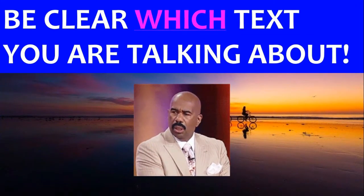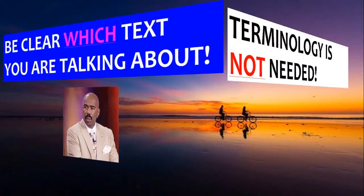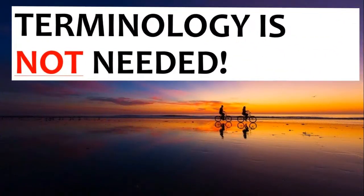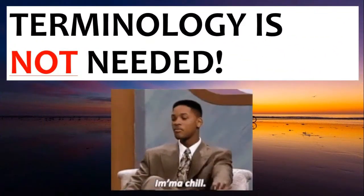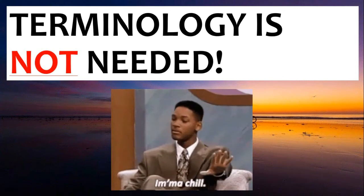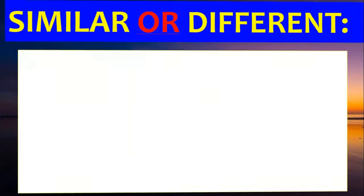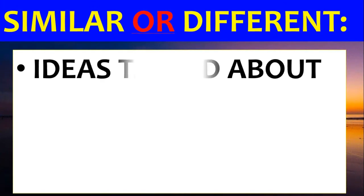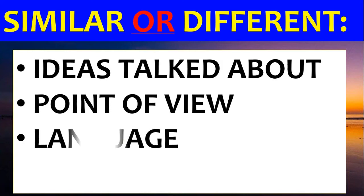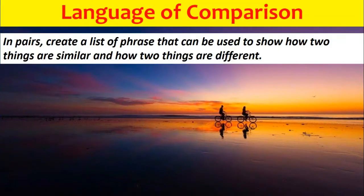Be clear which text you're talking about — a really easy way is just to use the author's names. Terminology is not needed, so you can use it if you want to, but you don't need to use loads of it, if any. Things I would comment on as being similar or different include: the ideas talked about, the point of view, the language, and the structure.